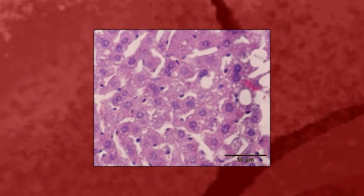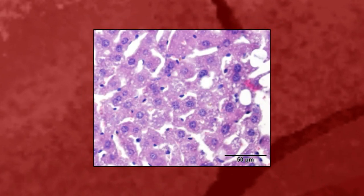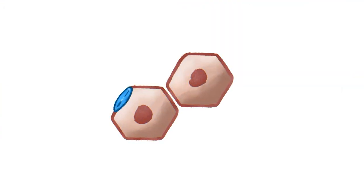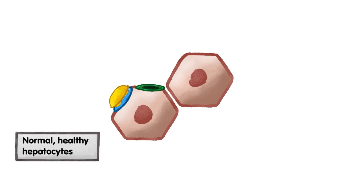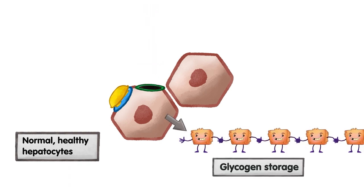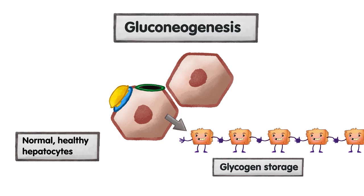Here you can see how the liver looks like. Let's zoom in a bit and look at what happens at the cellular level. When insulin arrives at the surface of the liver cells — the so-called hepatocytes — it primarily stimulates glucose uptake and its storage in the form of glycogen. At the same time, it signals the cells to stop producing glucose itself, a process that is called gluconeogenesis.